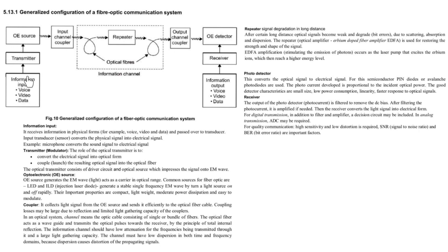Here, the information input is the physical form of information. For example, it can be voice, video and data that has to be communicated and it will be passed over a transducer. At the input side, we will be having an input transducer, which is also known as a sensor, which converts physical signal into electrical signal. For example, microphone converts sound signal to electrical signal.